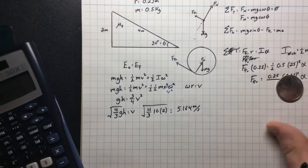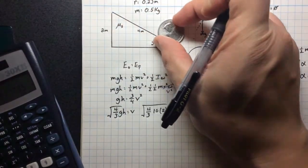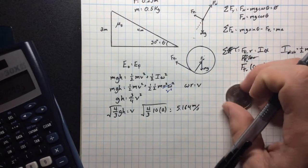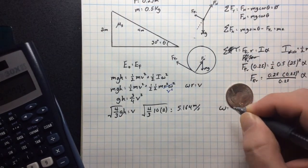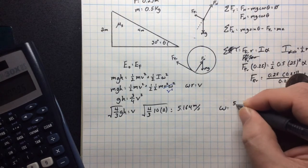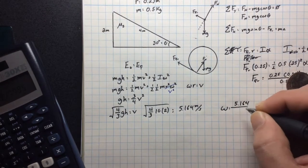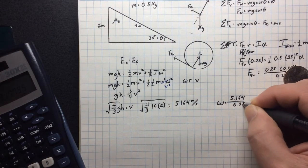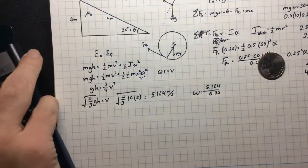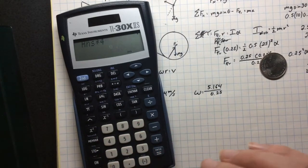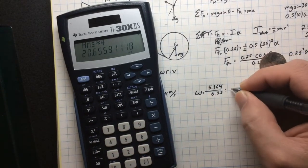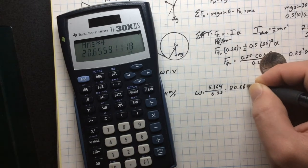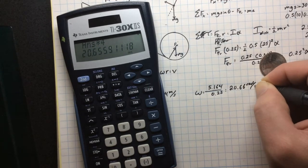And again if you wanted to find the angular velocity. Angular velocity in this case would just be our translational velocity divided out by the radius. The radius was a quarter because it's a quarter. So we'll just divide by point two five or multiply by four. And we get an angular velocity of twenty point six six radians per second by the end.